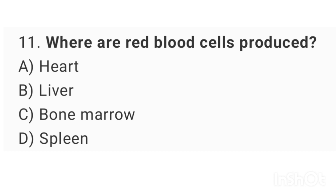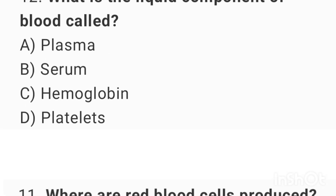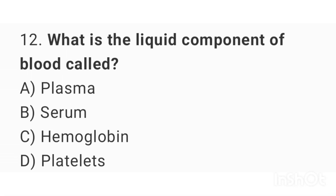Question number 11: Where are red blood cells produced? The right answer is option C: bone marrow. Question number 12: What is the liquid component of blood called? The right answer is option A: plasma.